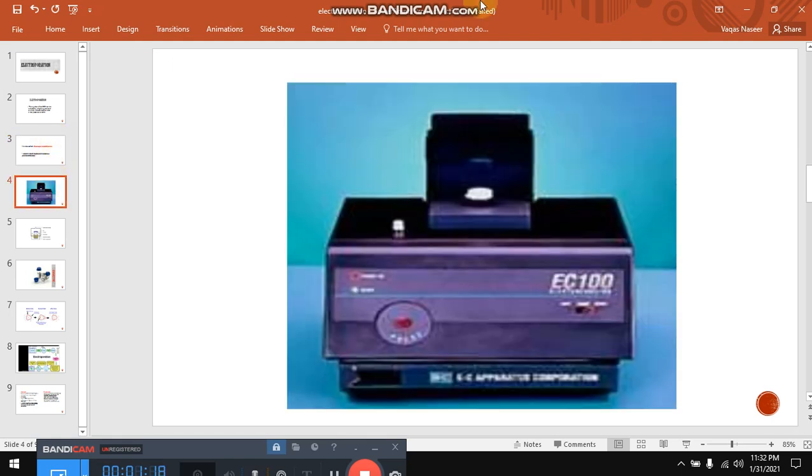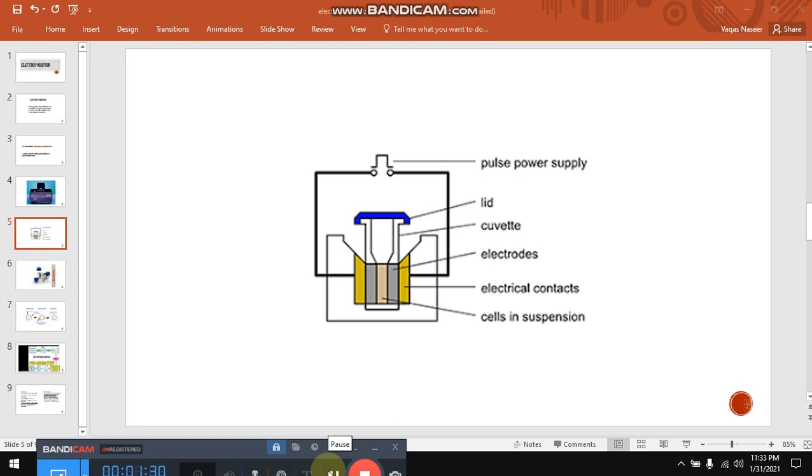Friends, this is basically the actual electroporator which is used for the process of electroporation. Now we have to see what actually happens in that appliance. We have inserted a cuvette inside the appliance. You can see over here, diagrammatically, I am trying to explain the whole phenomena. This is the cuvette you can see over here. This cuvette is maybe of plastic or glass with aluminum electrodes on both of its sides.